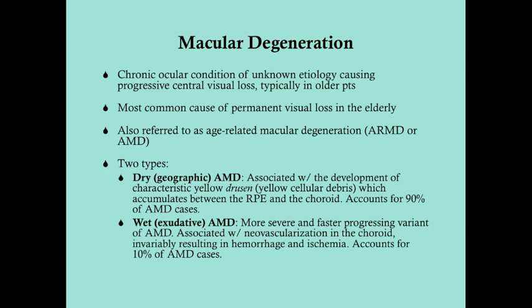Drusen are a very common finding and the presence of drusen does not imply that the patient has or necessarily will develop AMD. These are something you see in older people's eyes. However, the more numerous the drusen spots appear in a patient's eyes, the more likely they are to develop AMD — but a patient can have drusen and never develop AMD.